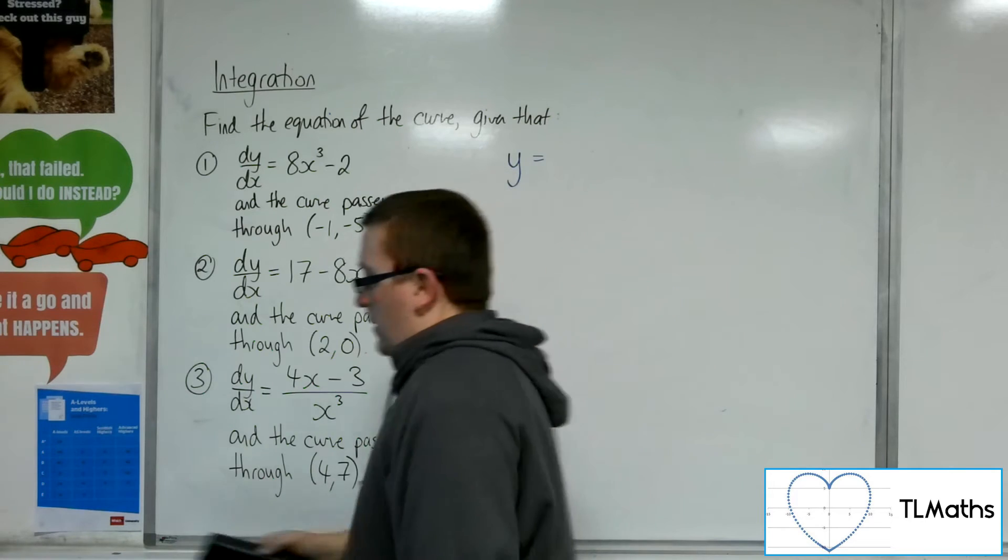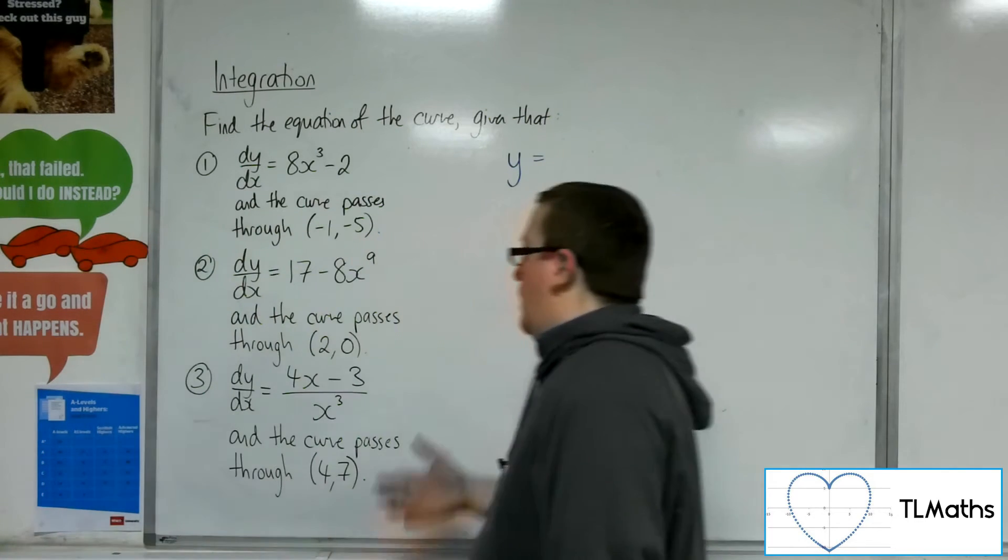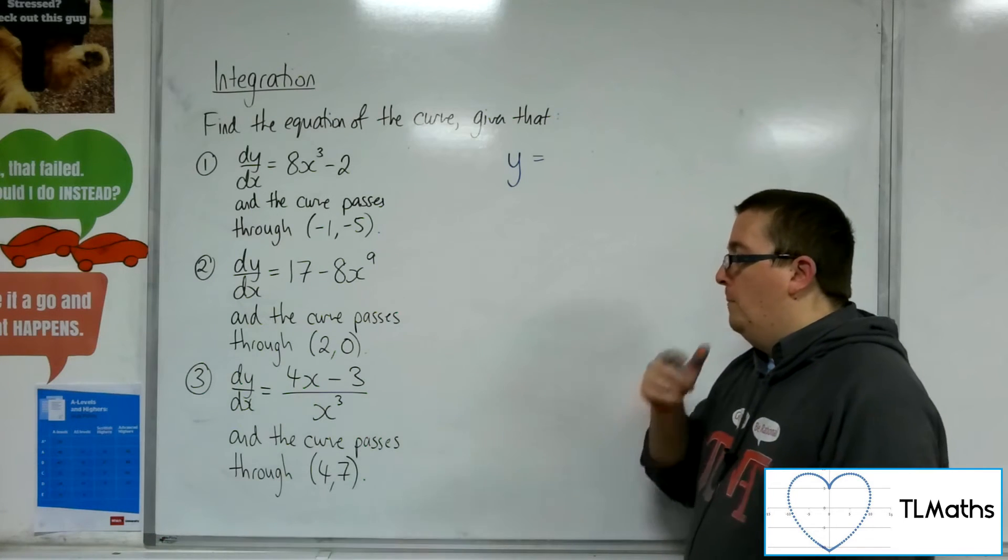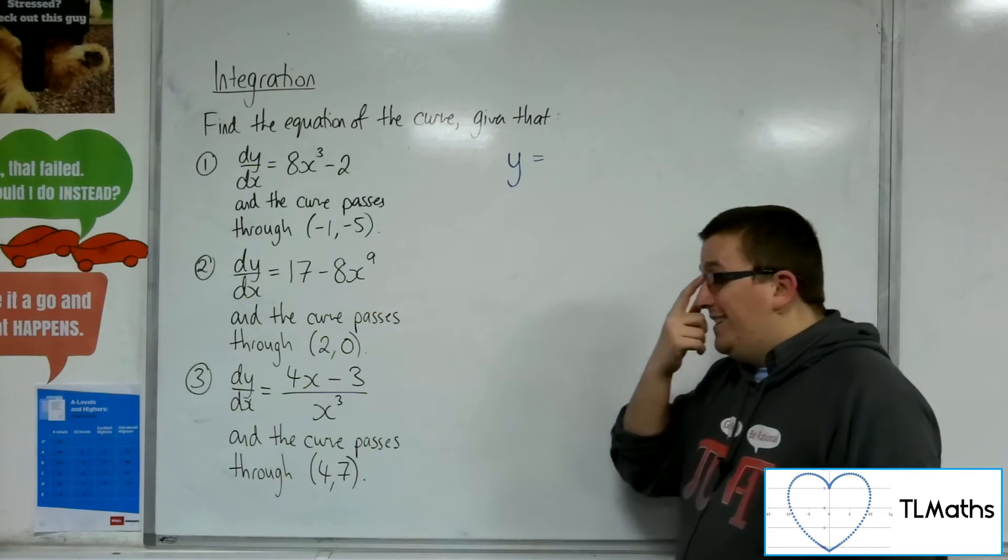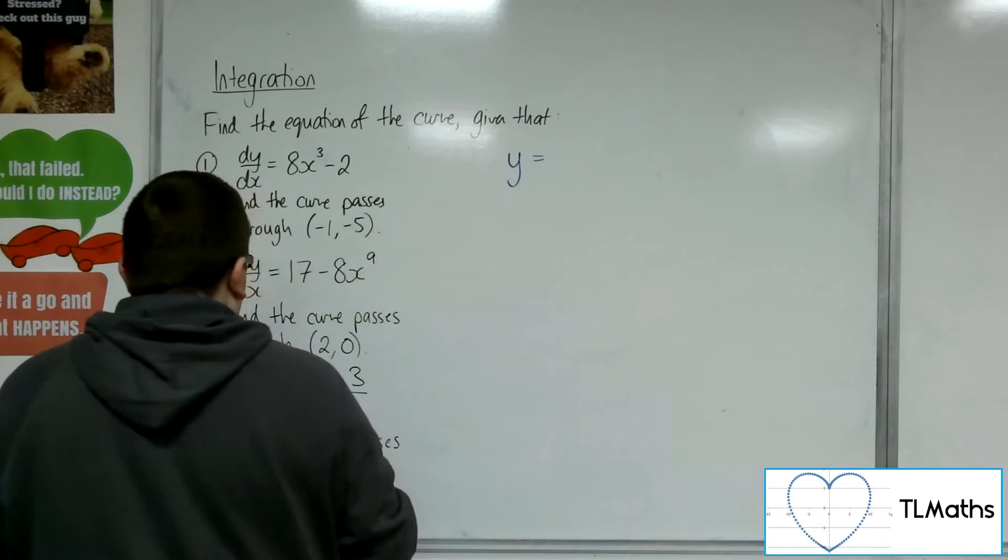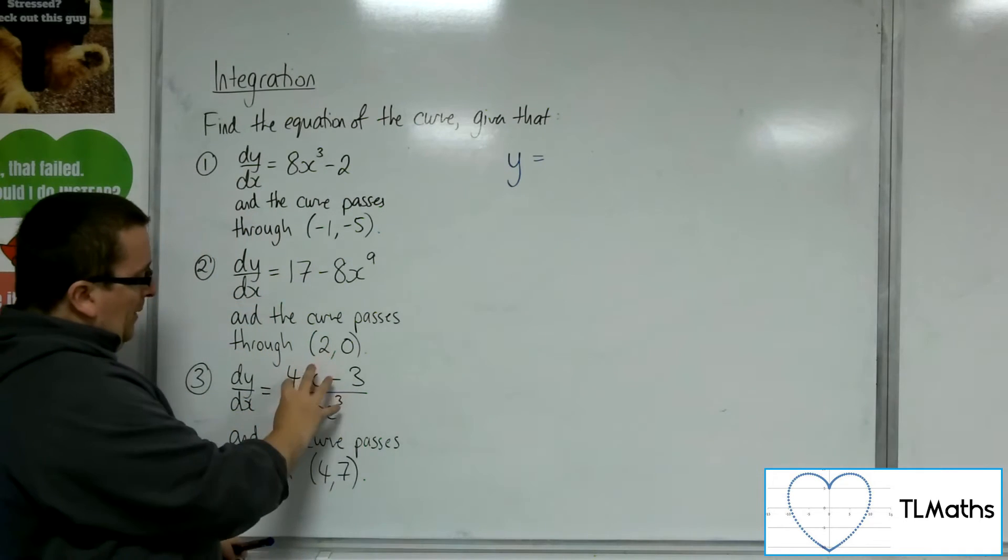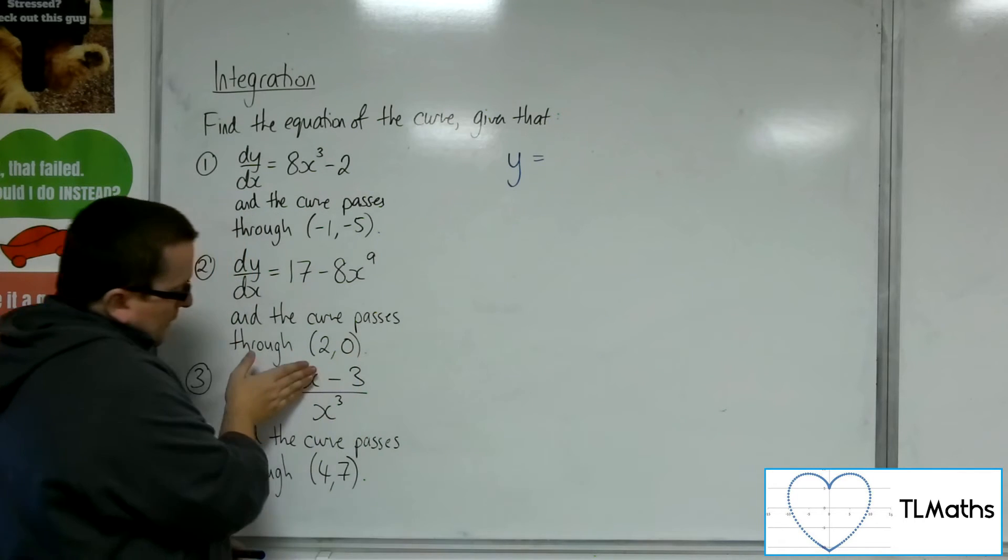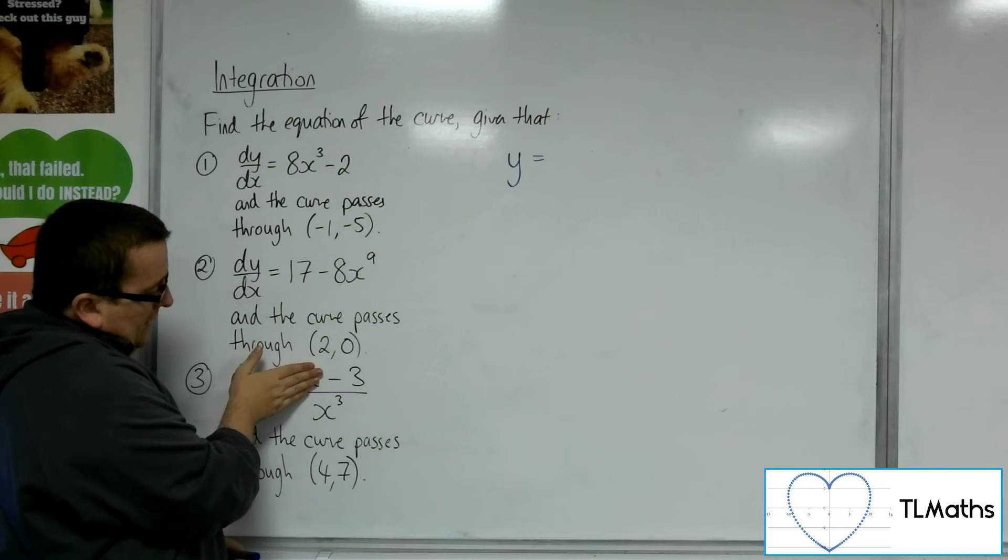So last but not least, this one dy/dx = (4x - 3)/x³. So it's not in the format that I can currently integrate. So what I want you to think about is splitting this up into two different fractions. We've got the 4x over x³ and the -3 over x³.